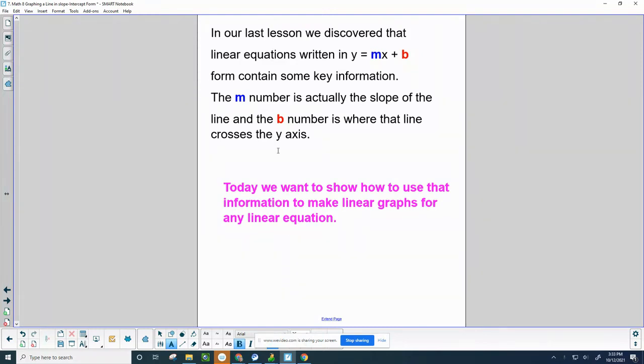In their last lesson, we discovered that linear equations written in the form y equals mx plus b contain some key information. The m number is actually the slope of the line, and the b number is where that line crosses the y-axis. So today, we want to show how to use that information to make linear graphs for any linear equation.